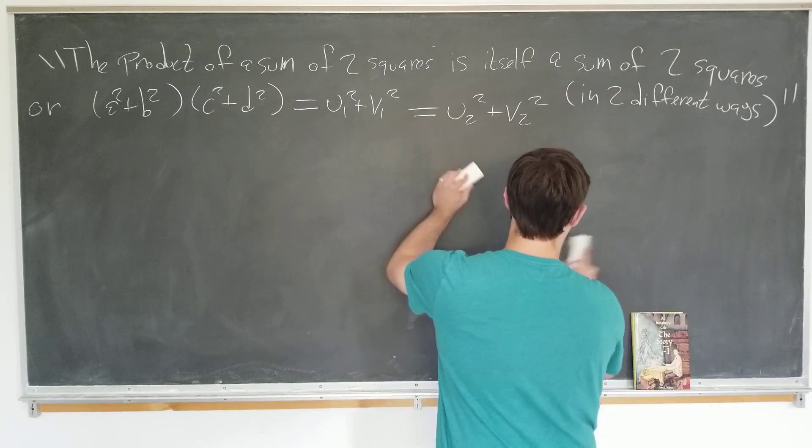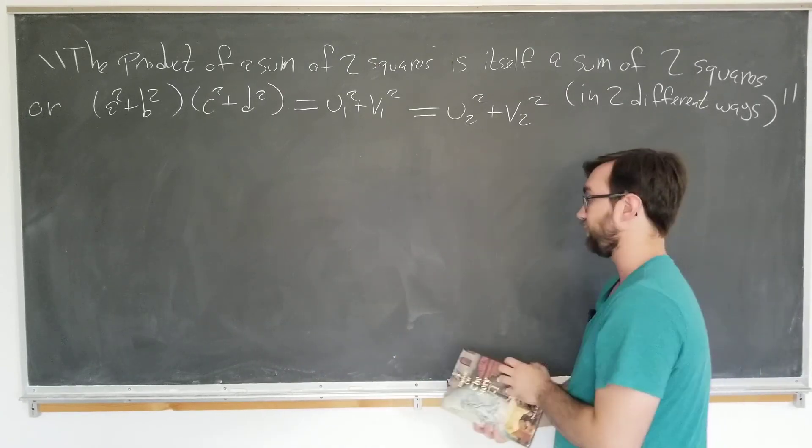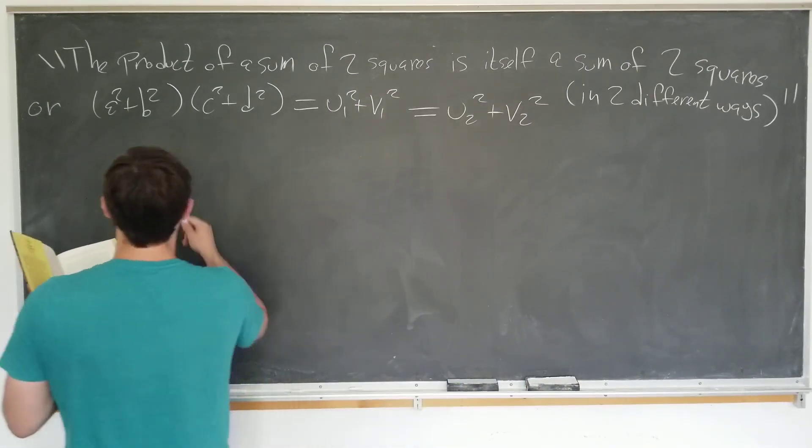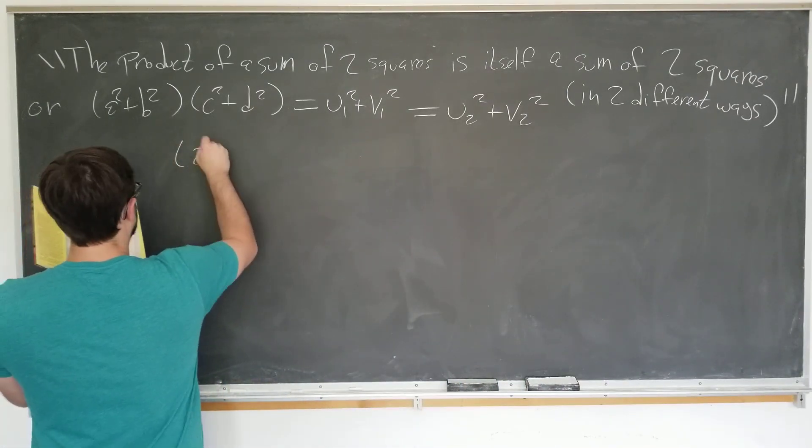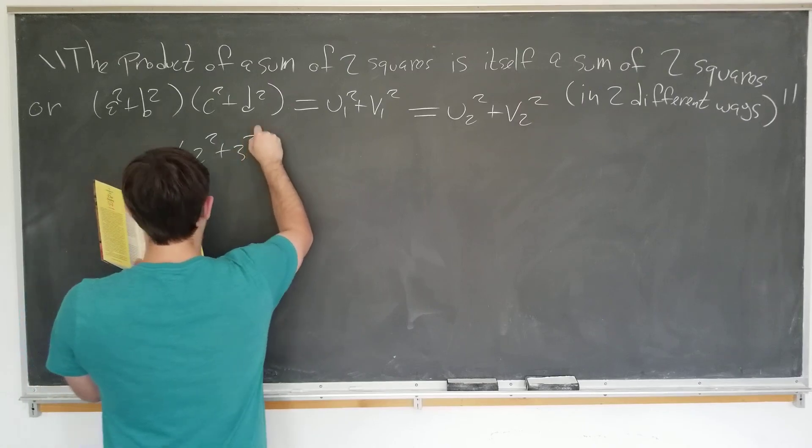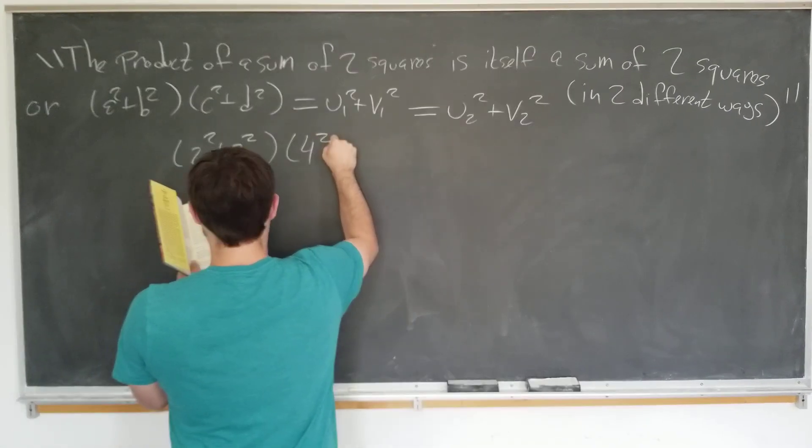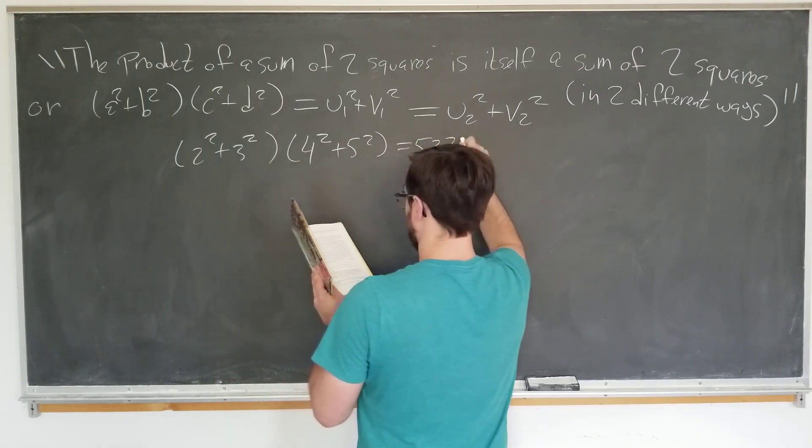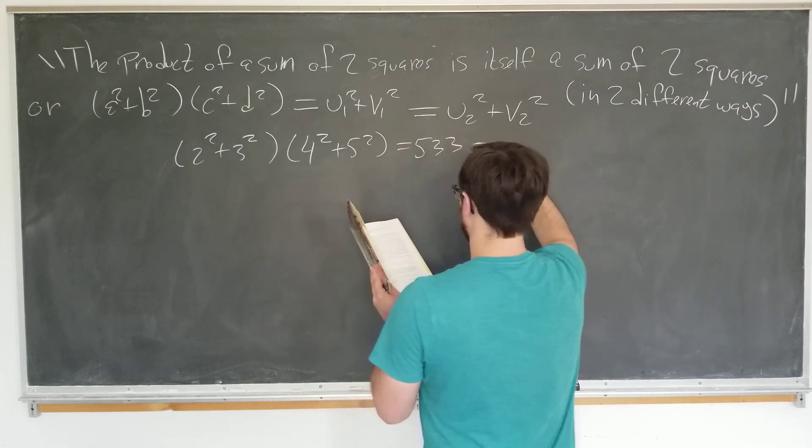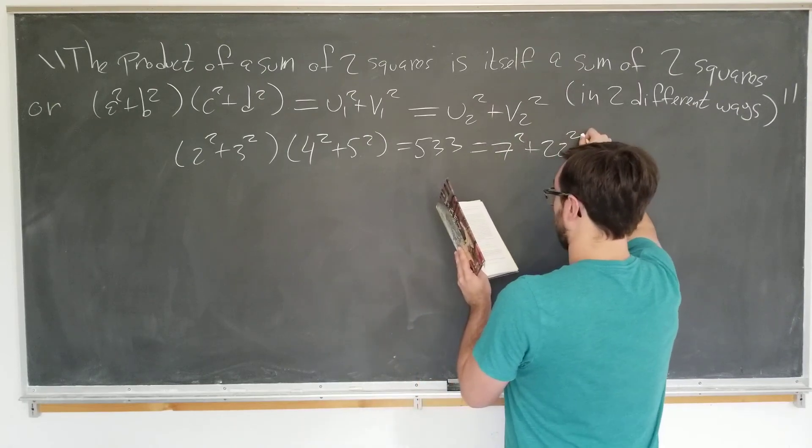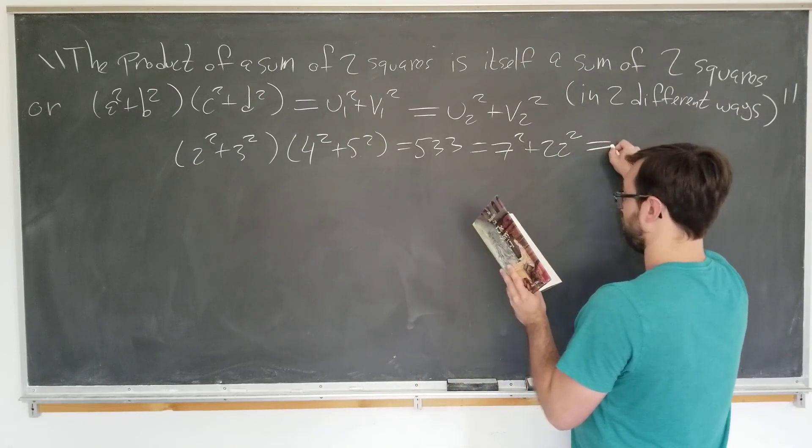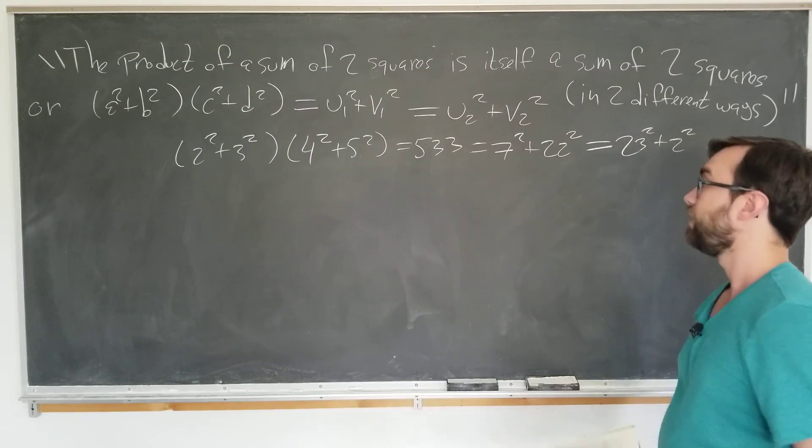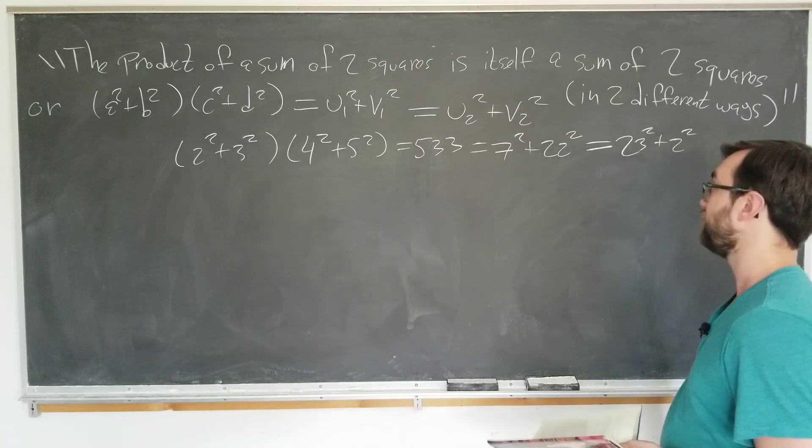Examples of this that you could easily find include the following, which you can feel free to verify. We have that 2 squared plus 3 squared times 4 squared plus 5 squared equals 533, which is equal to 7 squared plus 22 squared. And there's also a second way you can do this, 23 squared plus 2 squared.